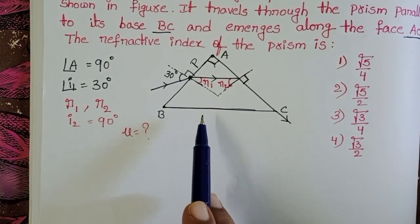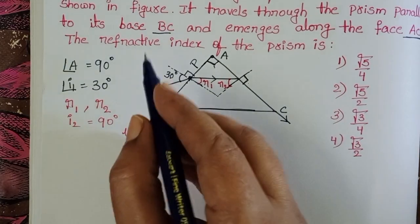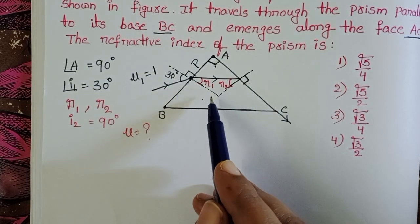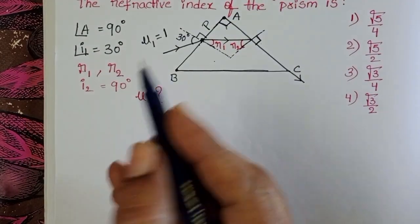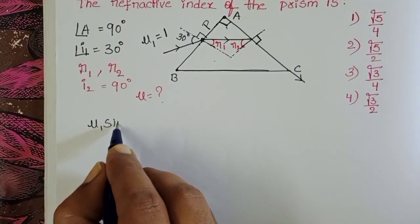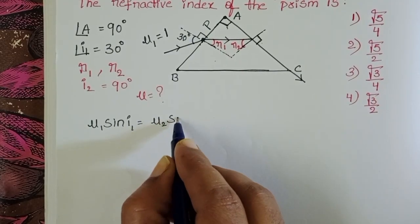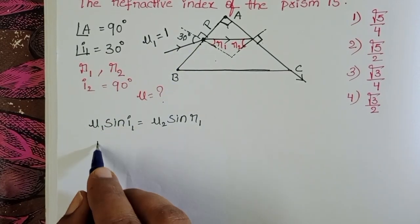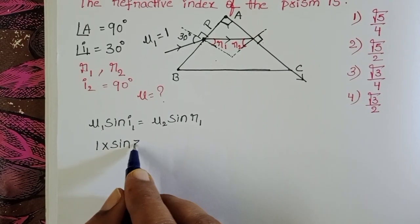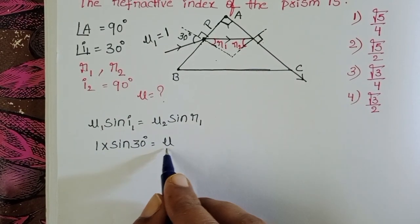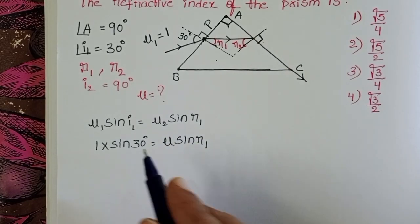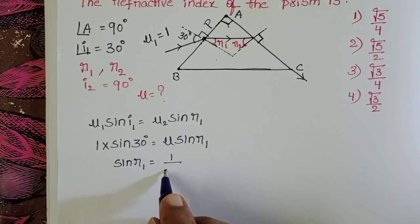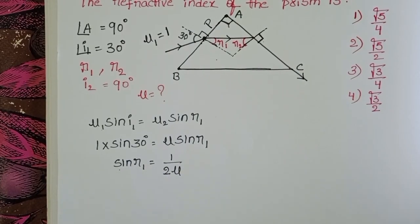We solve this using Snell's law at the first surface. The refractive index of the first medium (air) is 1, and the refractive index of the prism is μ. Applying Snell's law: 1 × sin 30° = μ × sin R1. Since sin 30° = 1/2, we get sin R1 = 1/(2μ). This is equation 1.